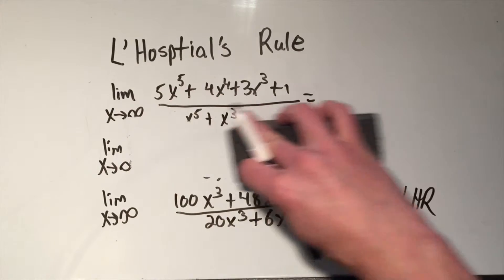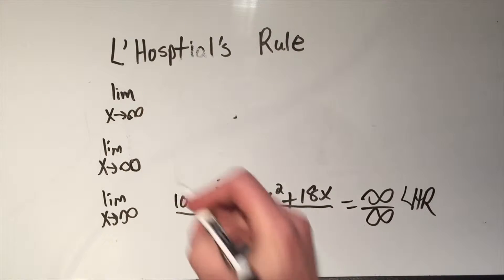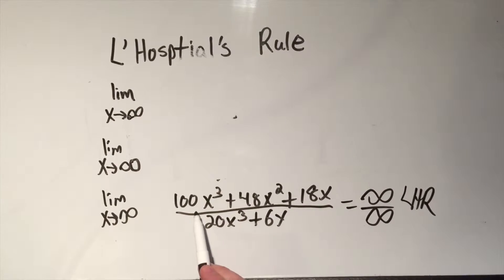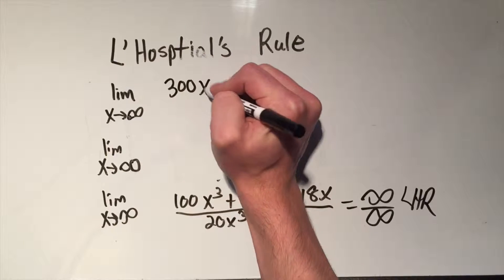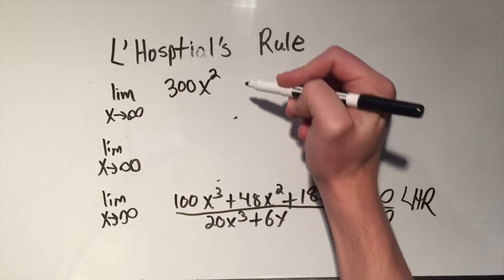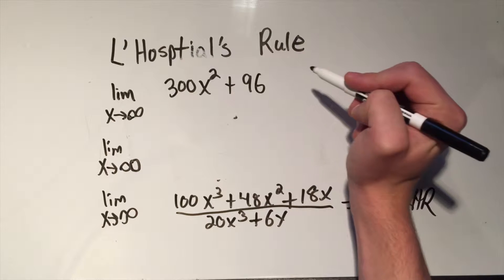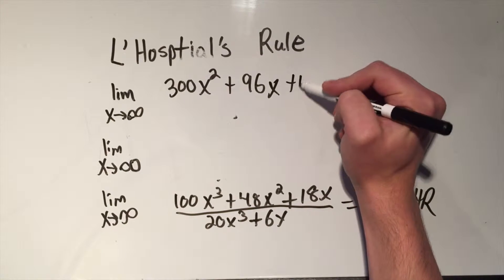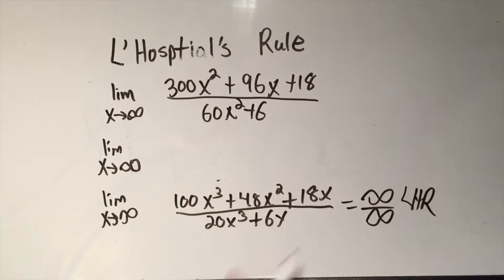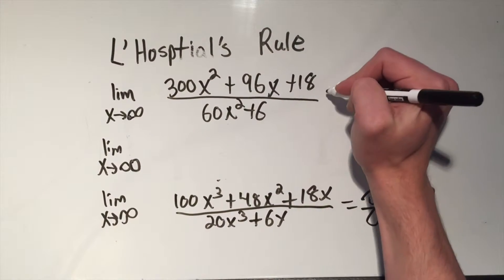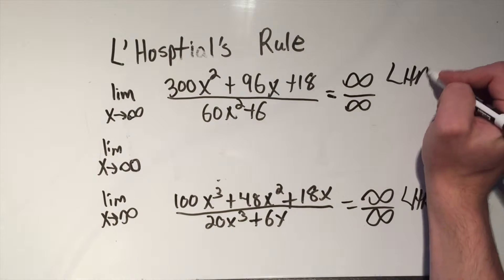I'm going to have to make some more room. Might as well keep these limits. X goes to infinity. You really should write that each time until you actually have an answer. I just keep taking the derivative. So the derivative of 100x cubed, that's 300x squared plus 48 times 2, I think that's 96x plus 18 all over 3 times 20, that's 60x squared plus 6. I'll plug in infinity. And, well, same deal. Infinity over infinity. So I write LHR one more time.